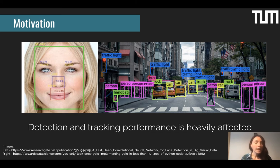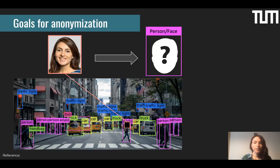If we do any of the techniques mentioned — blurring, mosaicing, or simply putting a square on top of a face or body — we lose all the work done in computer vision and can no longer perform multiple object tracking and segmentation. Therefore, in this work we try to tackle the problem from a computer vision perspective: can computer vision solve privacy while still allowing detection and segmentation algorithms to do their job?